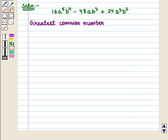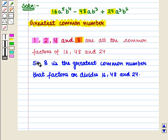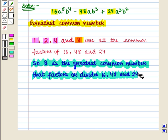Let us first find the greatest common number that factors or divides all three terms, that is 16, 48, and 24 in the given expression. We see that 1, 2, 4, and 8 are all common factors of 16, 48, and 24, but the greatest common factor is 8. So 8 is the greatest common number that factors or divides 16, 48, and 24.